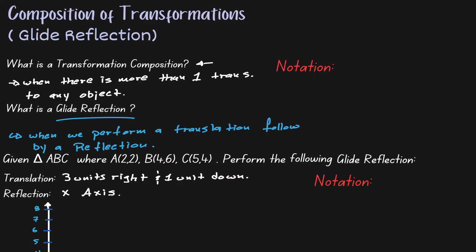Before we jump into an example, let's talk about the notation we will be using. For composition, we always use an open circle. On the right-hand side, we write our first transformation, and on the left-hand side, we write our second transformation.